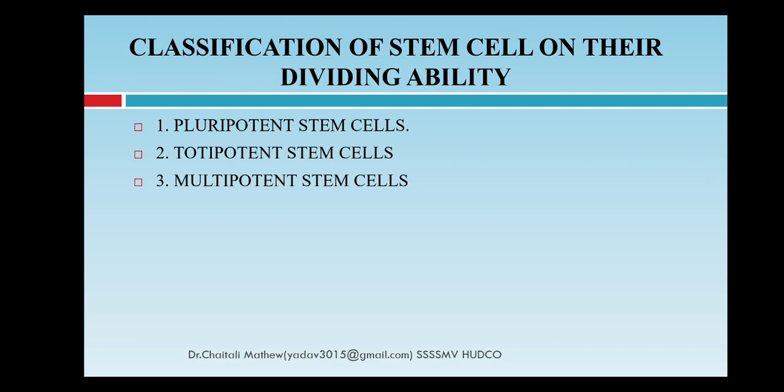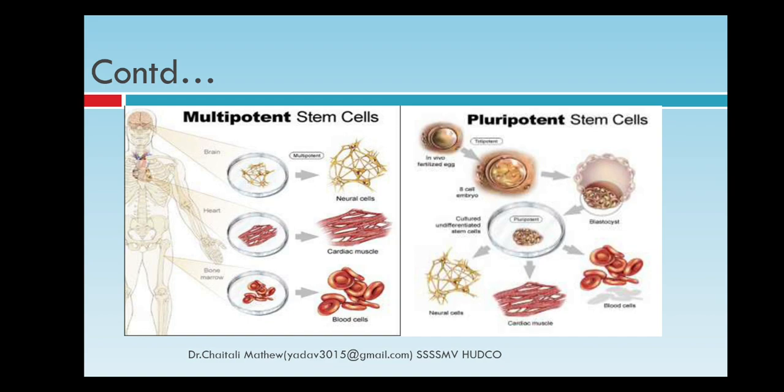Stem cells can be classified on the basis of their dividing ability into pluripotent cells, totipotent cells, and multipotent cells. Multipotent cells can be divided into neural cells, cardiac muscles, and blood vessels; as their source is the brain, they can develop brain, heart, and bone marrow. Pluripotent cells are those which later form the cell embryo, then blastocyst, and are responsible for generation of neural cells, cardiac muscles, and blood cells.